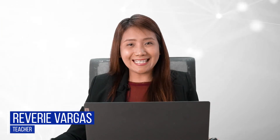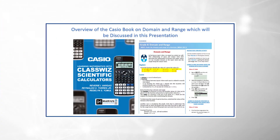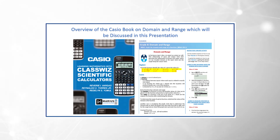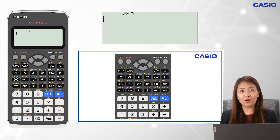Good day, dear learners and teachers. I am Reverie I. Vargas, a junior high school mathematics teacher. In this video, we will explore how we can use a class-based calculator in learning and teaching domain and range. The examples and steps to be discussed are also indicated in the Casio book on domain and range. The Casio emulator is a great tool for teachers to simulate the process of learning and computation in class.